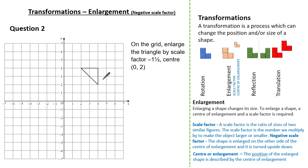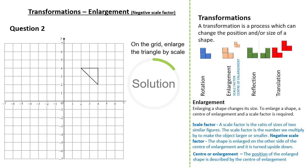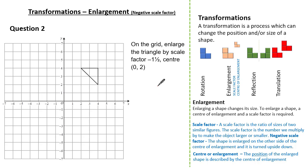The next question wants us to enlarge the triangle by a scale factor of minus one and a half with the centre at zero, two. Let's identify our centre of enlargement at zero, two and count to each vertex. From the centre to the first vertex, we have gone two to the right and two up. With a scale factor of minus one and a half, we do the opposite and multiply by one and a half: two right and two up gives us three to the left and three down. This is our new vertex.